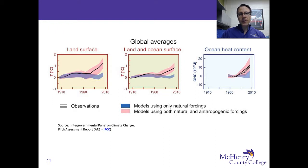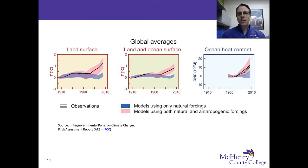In this next graphic from the AR5, we see global averages and three graphs communicating that information. The first graph is about land surface temperatures, the second one is about land and ocean surface temperatures, and the third one is about ocean heat content.